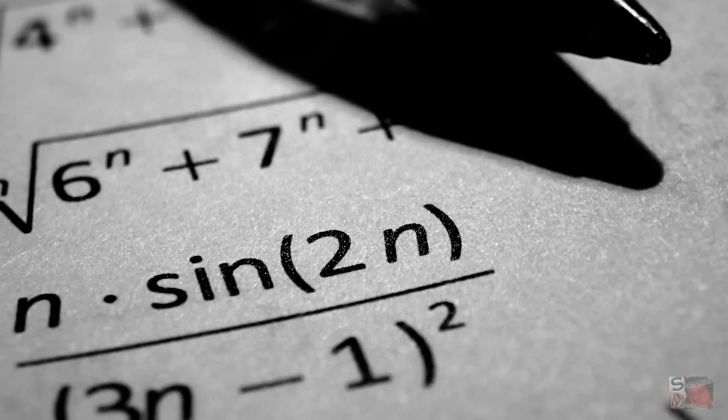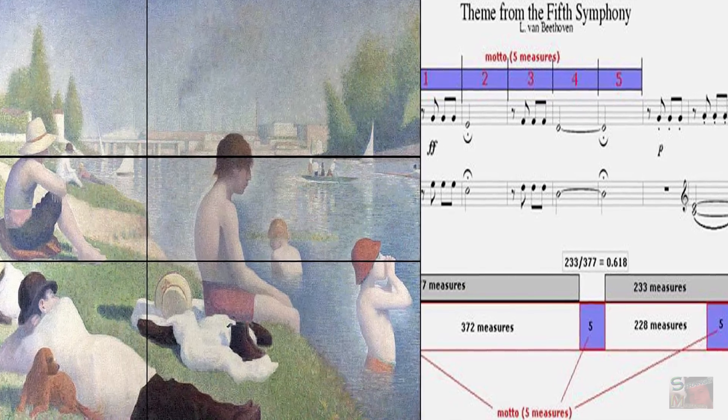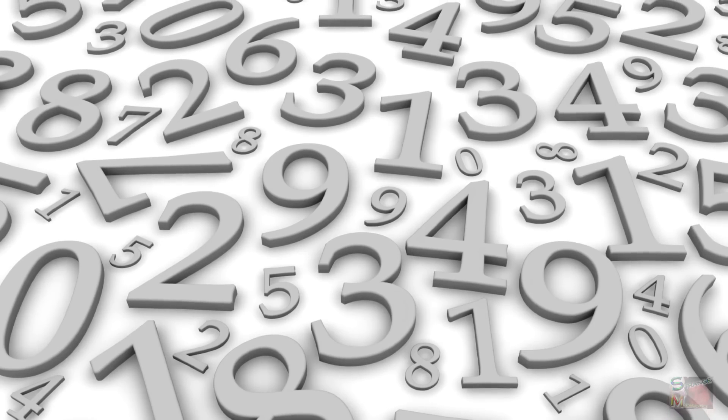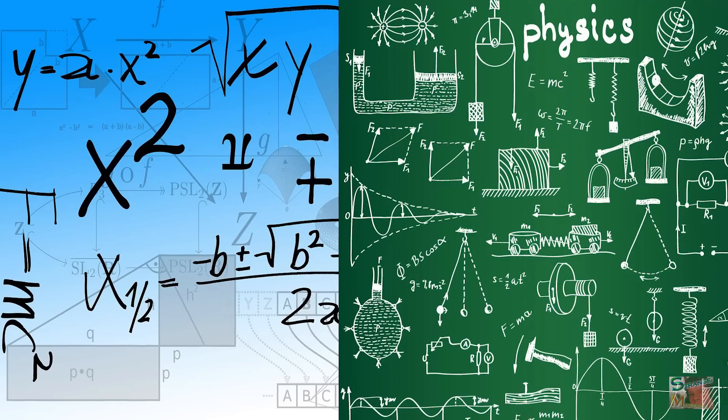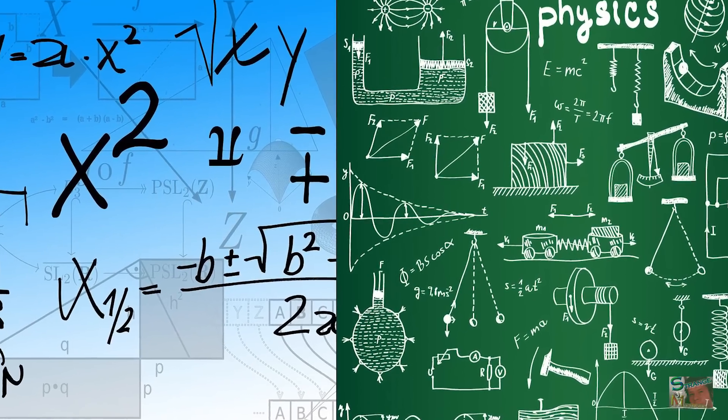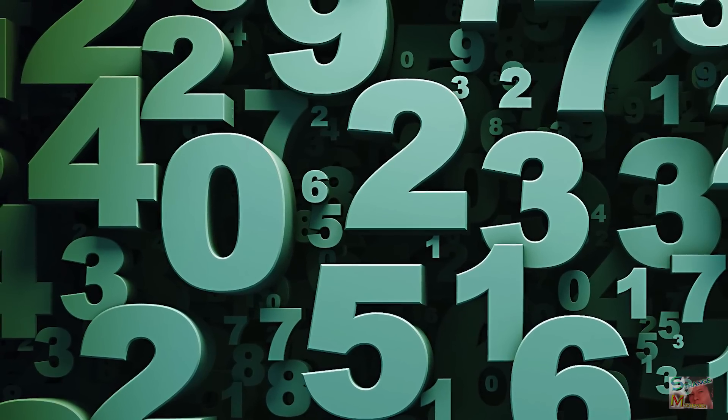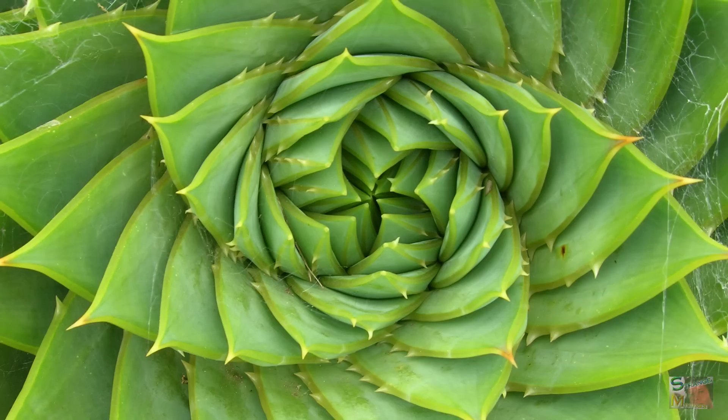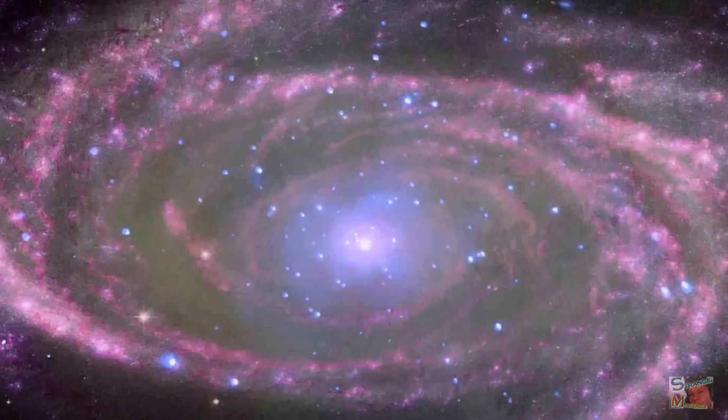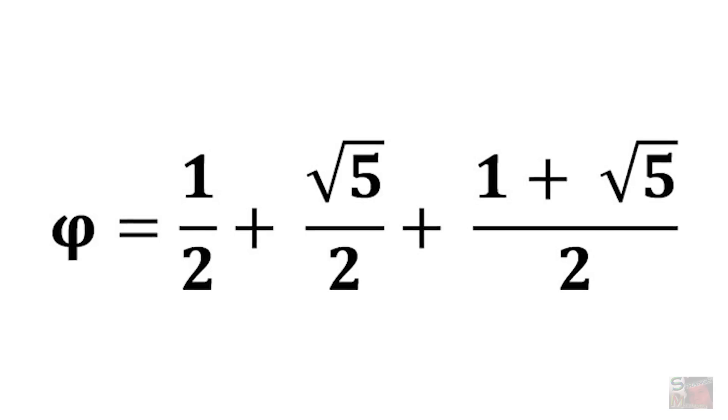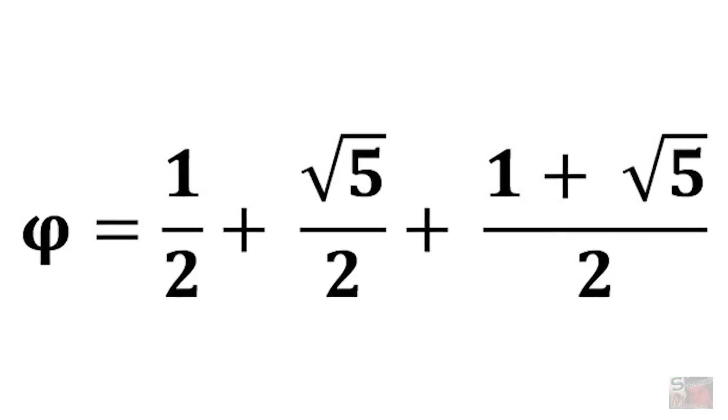Imagine if there was a perfect number - a single number so flawless it formed the basis for all art and music, a number so important that it could be used across the disciplines of mathematics and physics, and a number so profoundly purposeful that the natural world and the universe would bend to its whims. That number is 1.618034. So let's find out why it's so important.